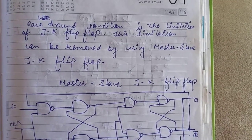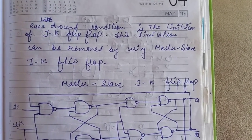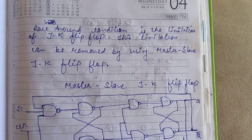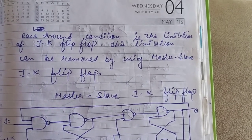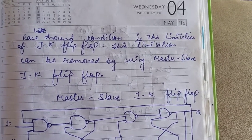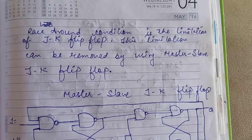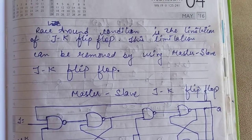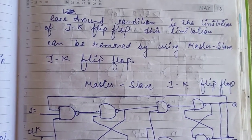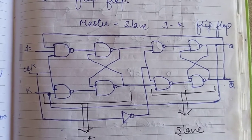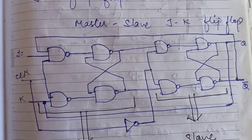Hello students, today we will discuss the race around condition. The race around condition is a limitation of the JK flip-flop, and we will see how we can remove this limitation by using a master-slave JK flip-flop. This circuit is very easy to understand.